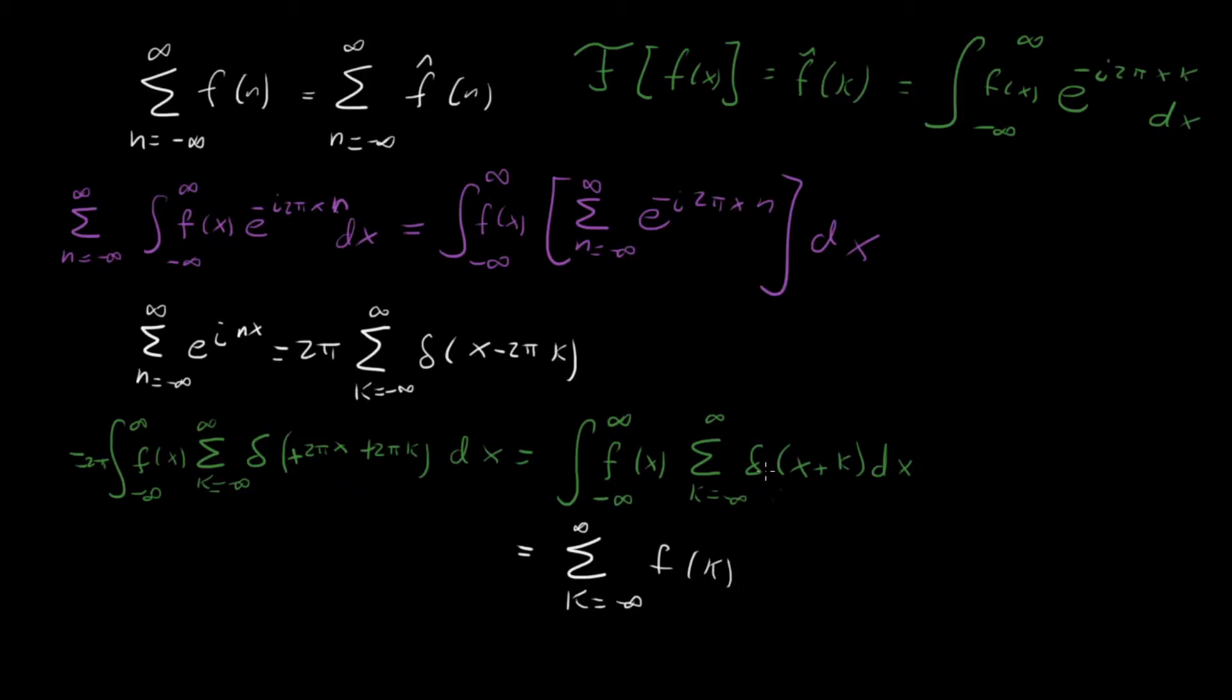Now you might complain, well, really what's happening here when we're doing this integral? We would pull out the sum, we would do the integral, and we'd have f of minus k. But with minus k, we can just flip the signs on this thing. And then it's nothing to worry about.